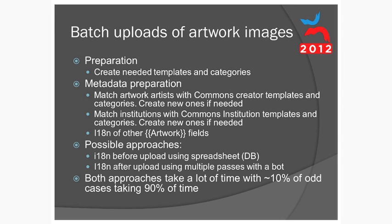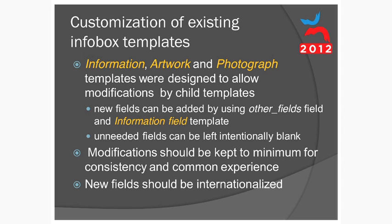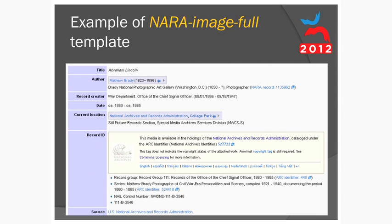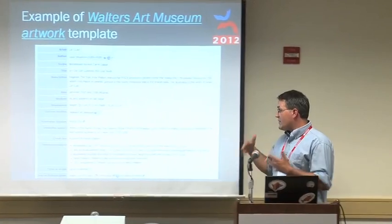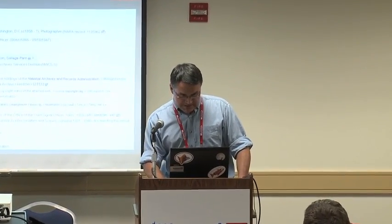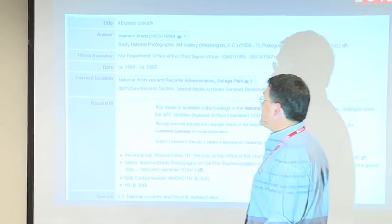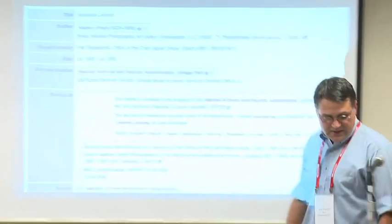Here are some examples of customized templates. This is a template from the Walters Art Museum — you can see that on their website they have much more information, and we managed to capture it with our templates. Here is a page from an Islamic manuscript, where we have both authors, scribes, and artists for that particular document. Also an example of ownership history — they have pretty good records and we managed to capture them. And images from the National Archives — managed to add extra fields that were not in the regular templates.